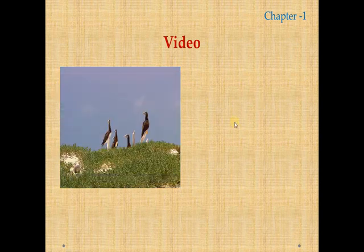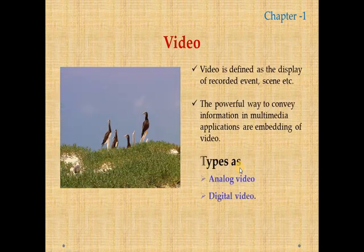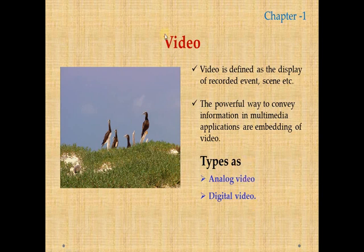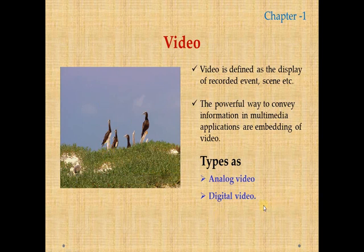Video is defined as the display of a recorded event or scene. It has two types: analog video and digital video. What you are looking at here is a digital video, because only digital video can be displayed using a computer.